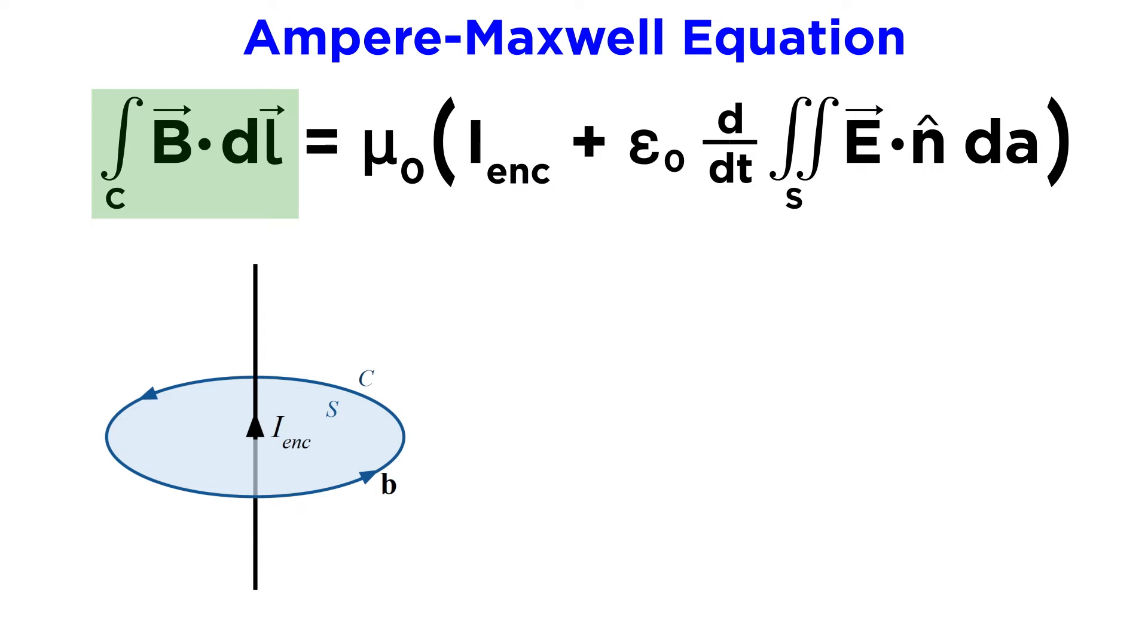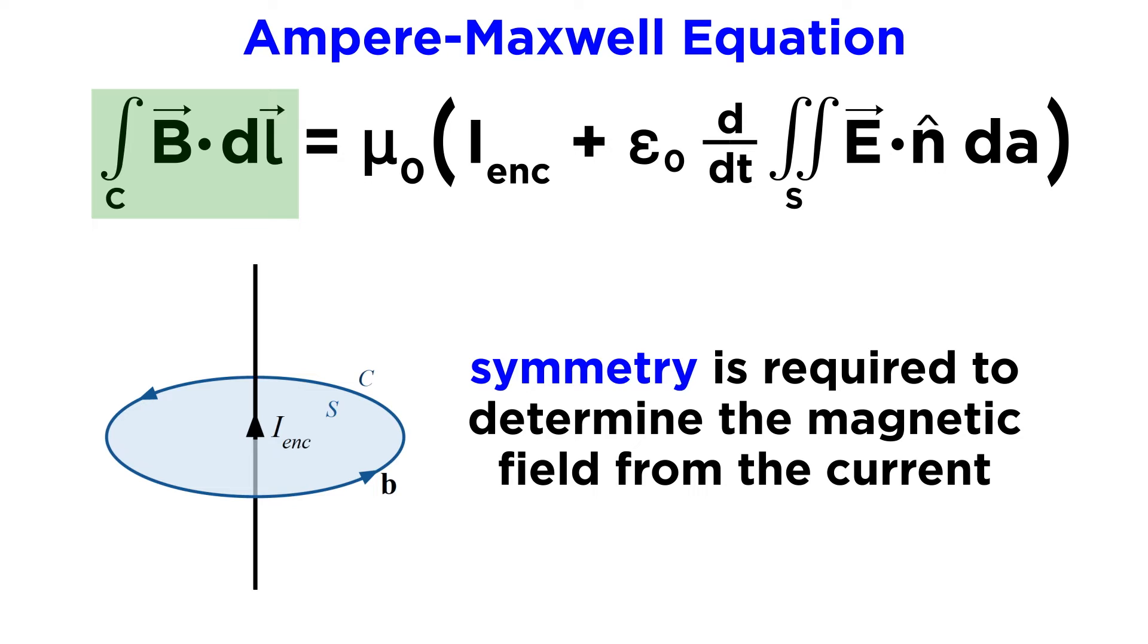Like the electric field in Gauss's law, the magnetic field in Ampère-Maxwell is buried inside an integral and coupled to a vector via a dot product. This further implies that a high level of symmetry is required to determine the magnetic field from the electric current, or a changing electric flux. The challenge arises in finding a way to move the magnetic field term out of the integral.